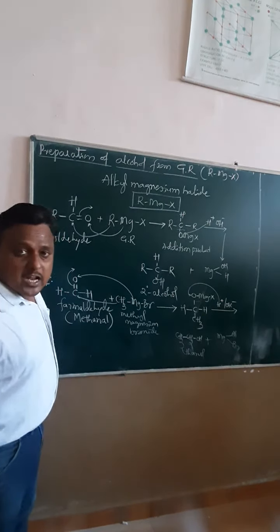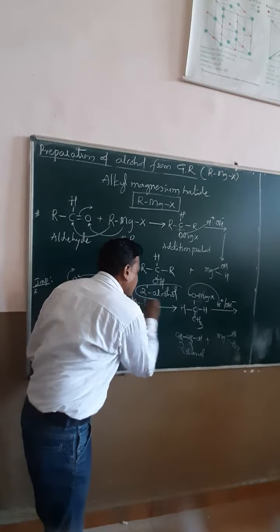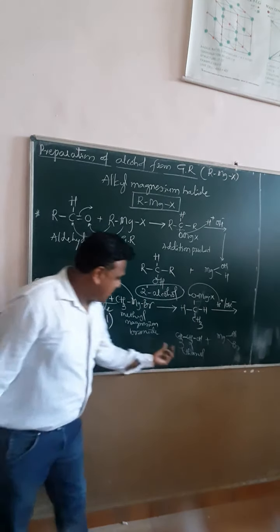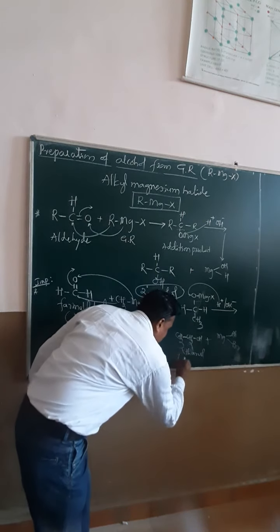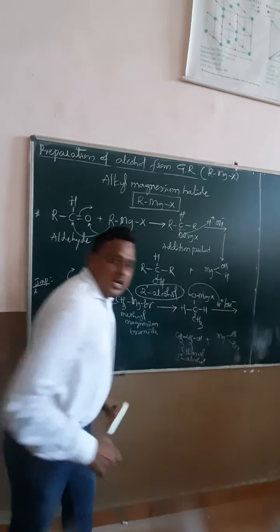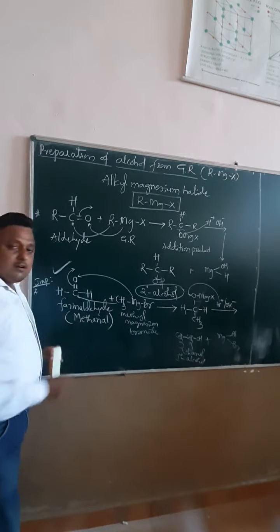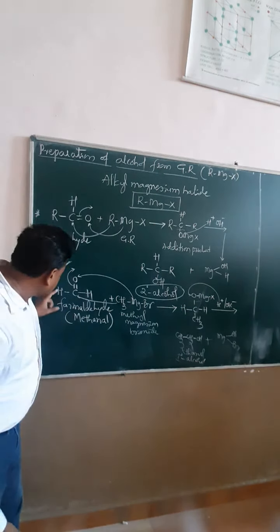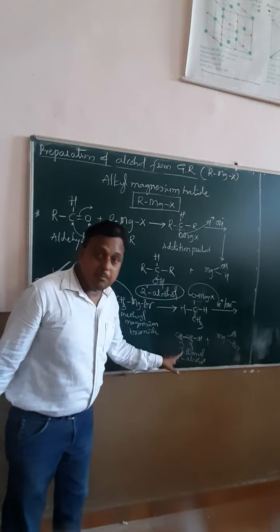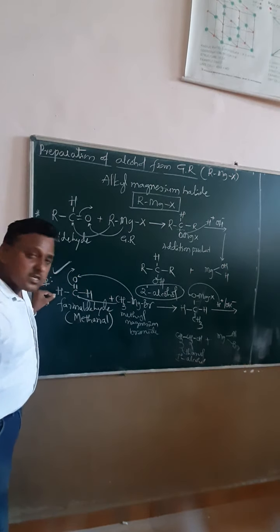Now, you know aldehyde generally gives secondary alcohol. But formaldehyde is a special case — ethanol formed from formaldehyde is a primary alcohol. If you consider formaldehyde as the reactant, you can get only a primary alcohol. Just changing this group to any alkyl group changes the outcome.